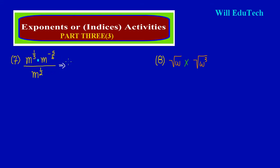Remember from earlier lessons: when multiplying indices of the same base, we simply add the powers. So what this is really saying is that I have a common base m and I'm going to add the powers. I have 1/3 and I'm adding to that negative 5/6 — let's put that in a bracket. Now this is all being divided by m raised to the power of a half.